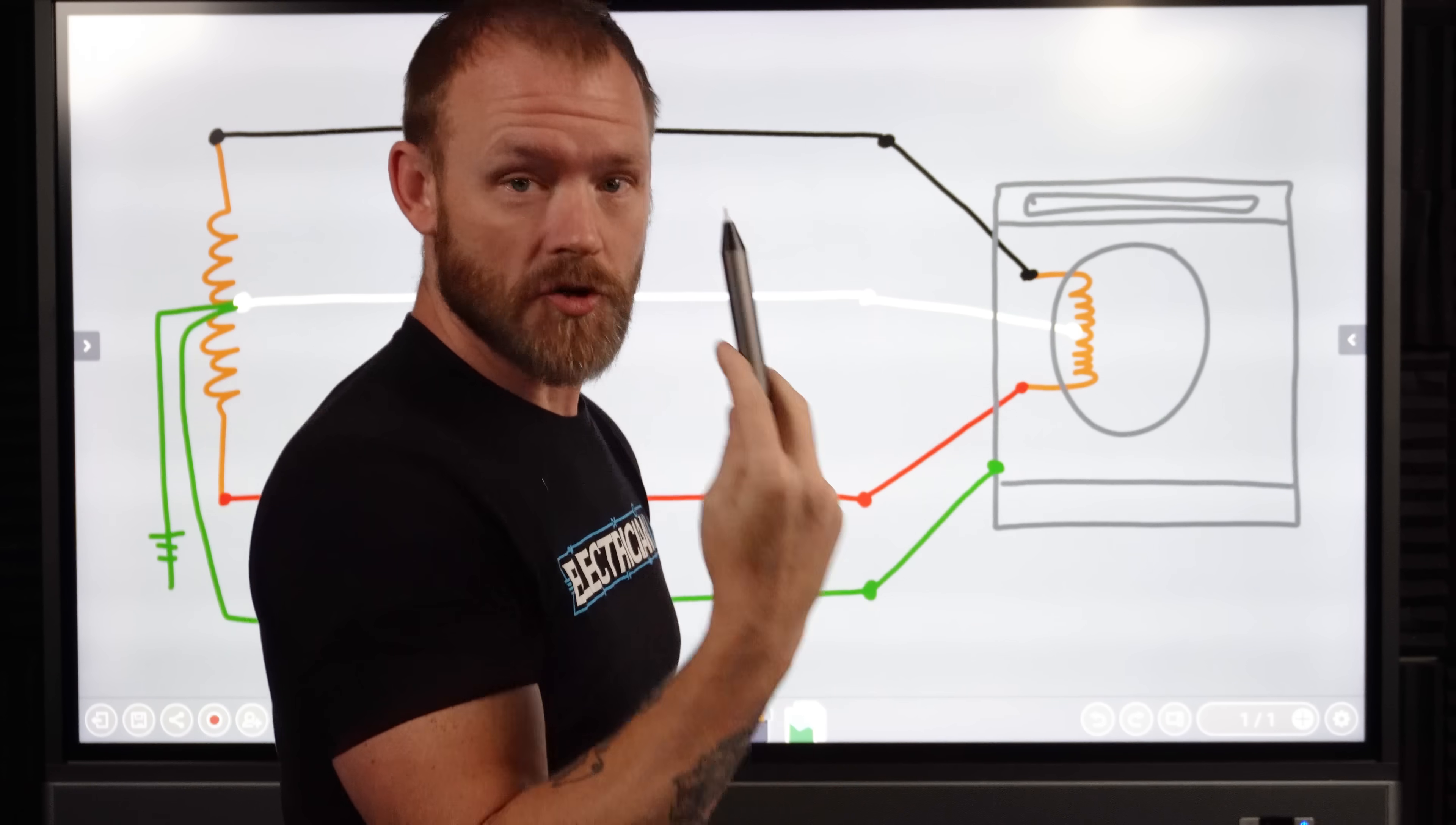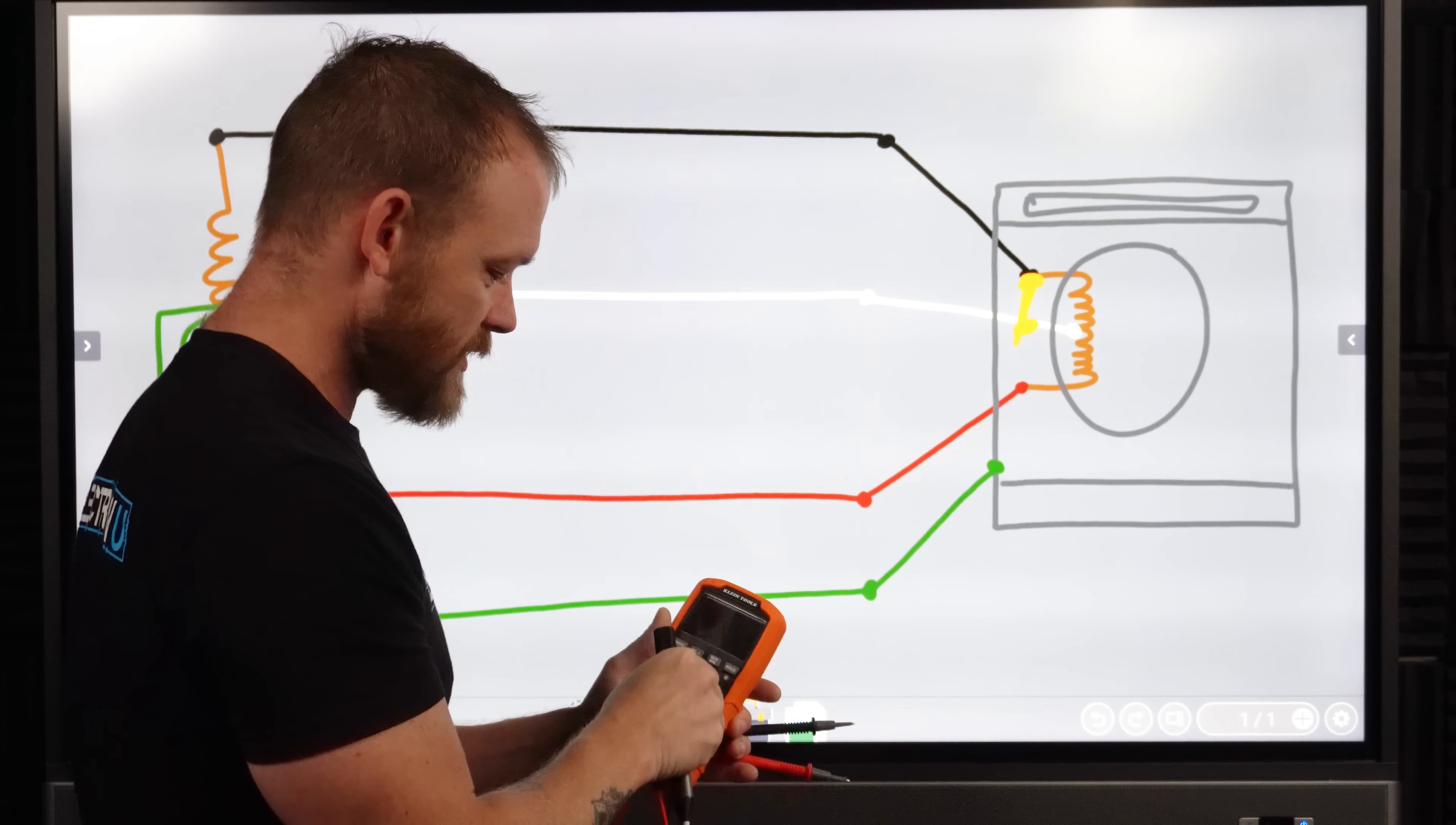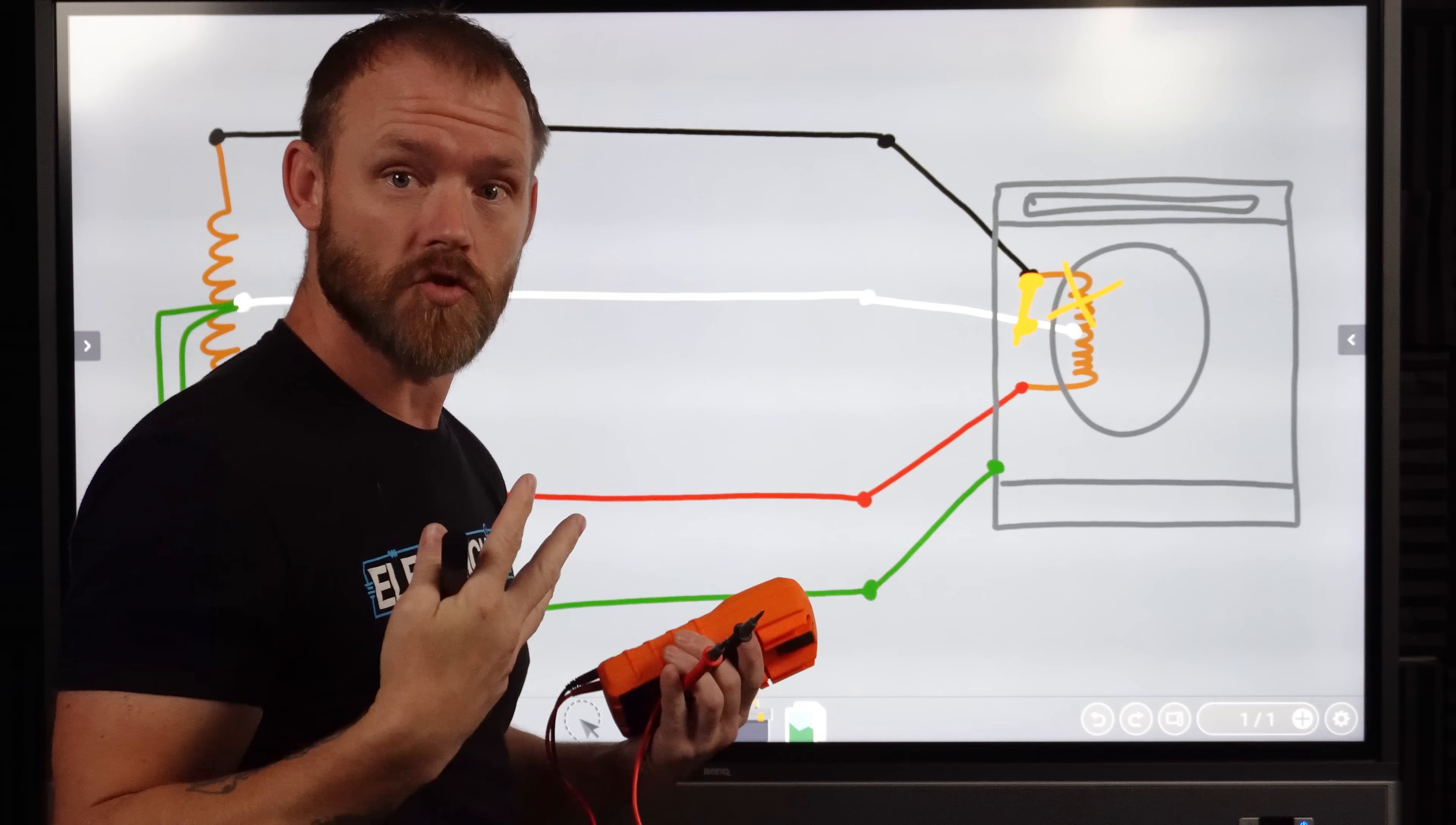So let's say that we have a short circuit right inside of this piece of equipment. For some reason, the terminals burnt up and boom, the black and the white are now touching each other. All right. So now the load is no longer a part of our circuit. We have conductors that are just touching each other. We're tripping a breaker constantly. Every time we hit that breaker, boom, boom, boom. It's like an immediate short.